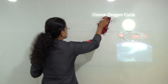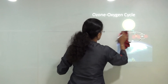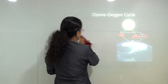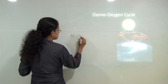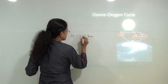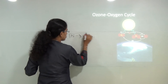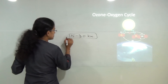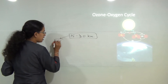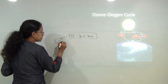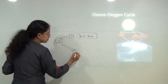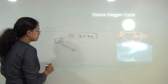Ozone is usually present in the stratosphere from 15 to 30 kilometers. This ozone layer is useful to us because it protects against the harmful ultraviolet rays that come from the sun from reaching the earth surface.